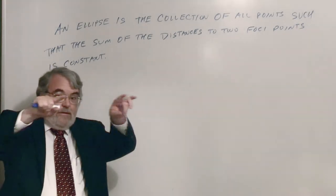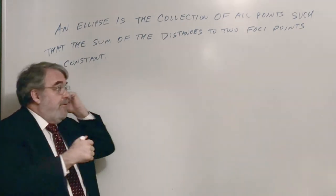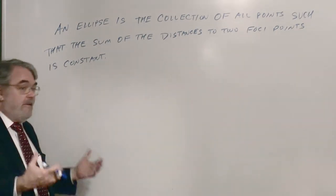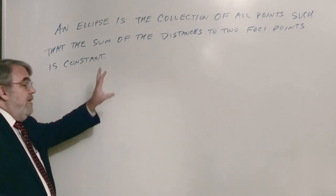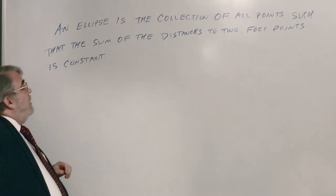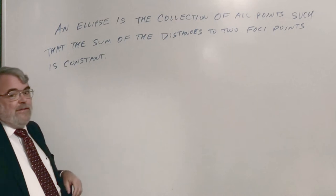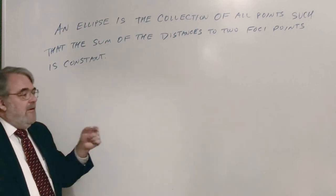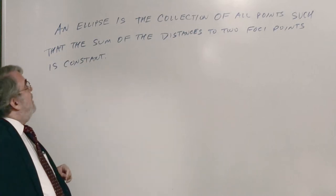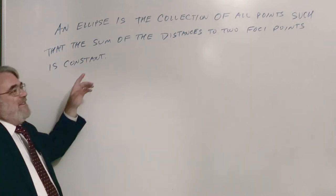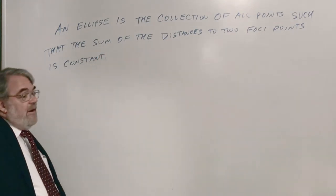Ellipses are oval-shaped objects, or literally circles that have been stretched. The definition was figured out many centuries ago. An ellipse is the collection of all points — the locus — such that the sum of the distances to two foci points is constant.